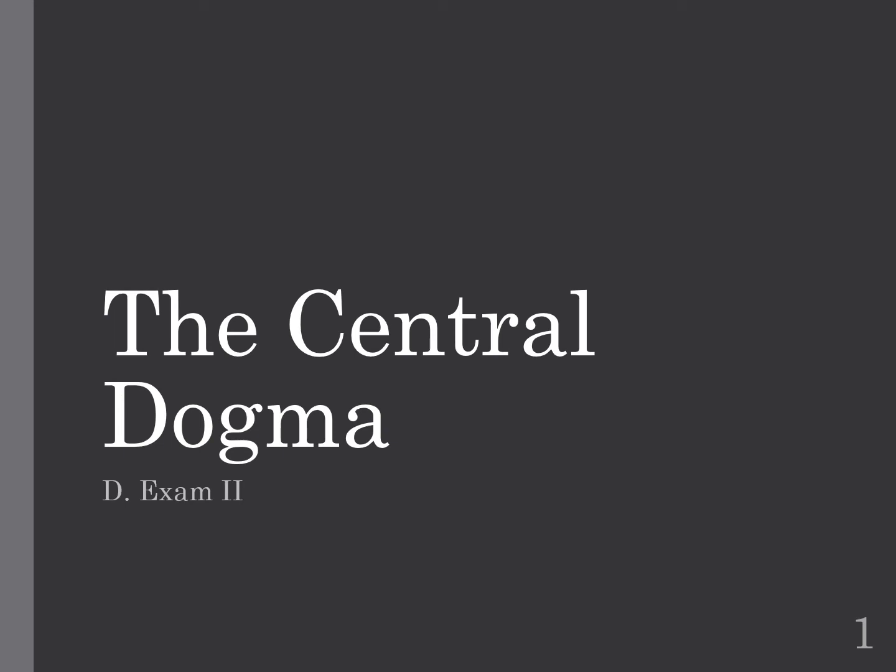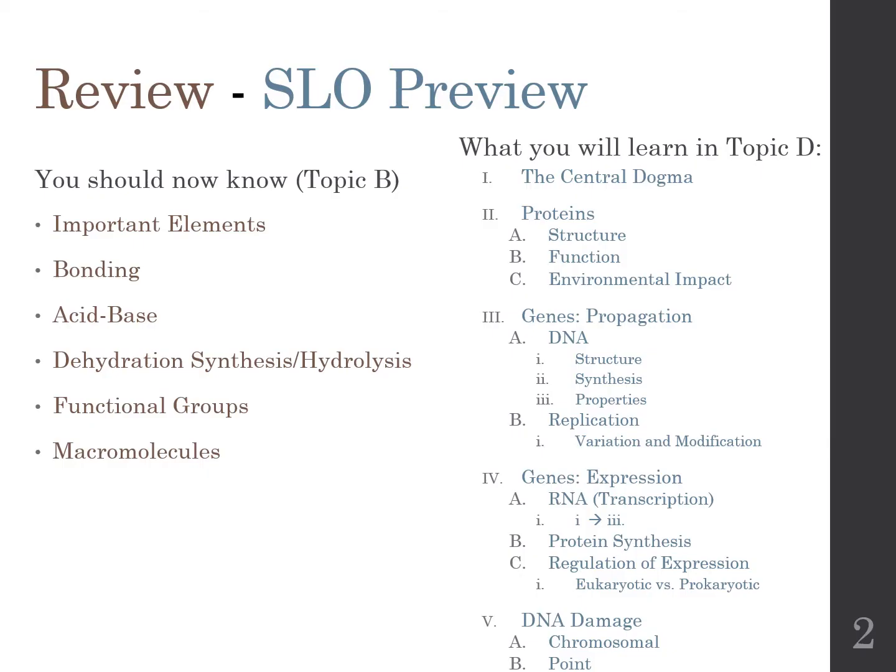The fourth topic for exam 2 is the central dogma. What we're going to do here is take all the information we picked up from topic B — anything from chemical reactions, from bonding, into building macromolecules, including things like dehydration synthesis and hydrolysis — to build our final macromolecules: DNA, RNA, and protein, to produce life.